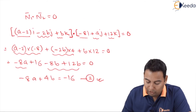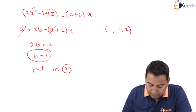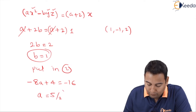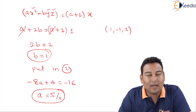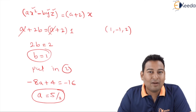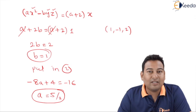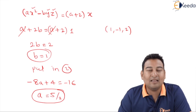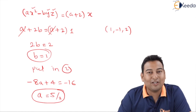We got b = 1. Now substituting b = 1 into equation number 2 (−8a + 4b = −16): −8a + 4 = −16, giving −8a = −20, so a = 5/2. We got both values: a = 5/2 and b = 1. To summarize: the problem required finding a and b, so we needed two equations. The orthogonality condition n1 bar dot n2 bar = 0 gave the first equation, and substituting the given point into phi one gave the second equation. Hope you understood, thank you.